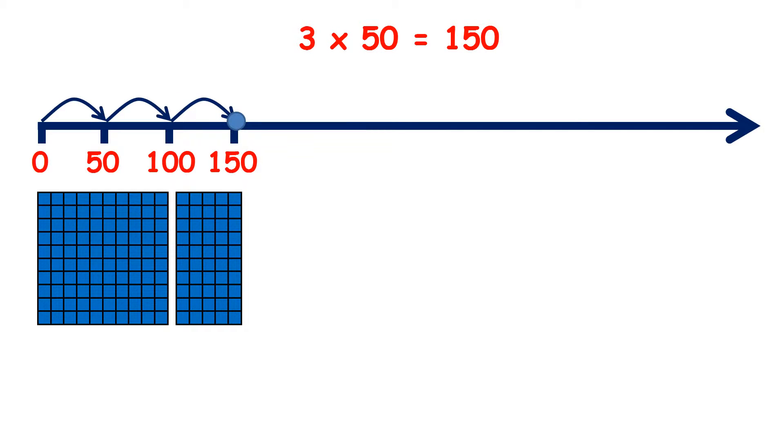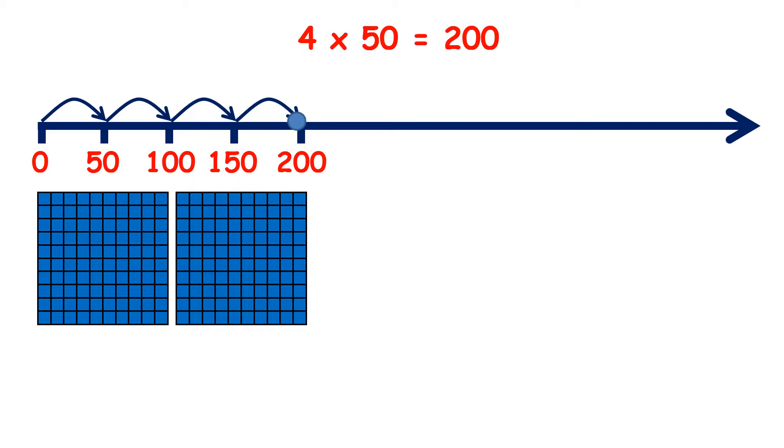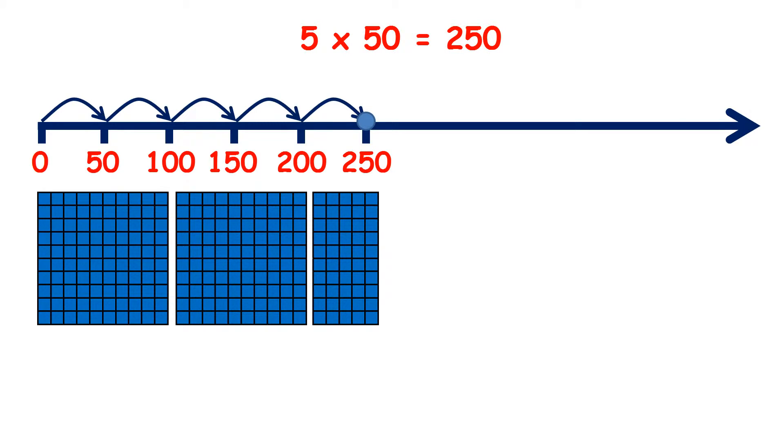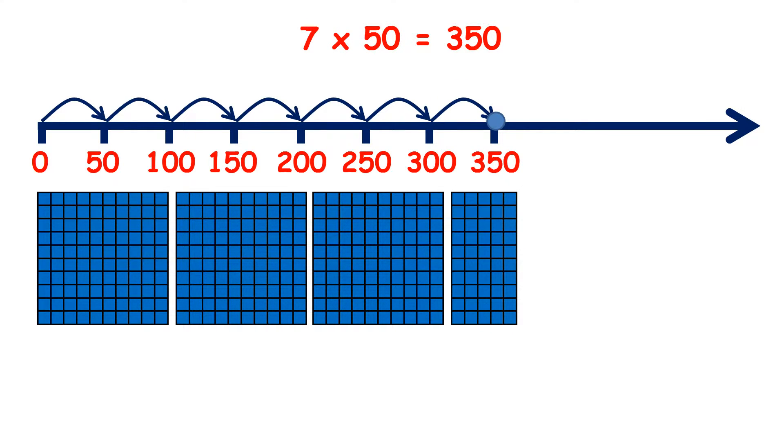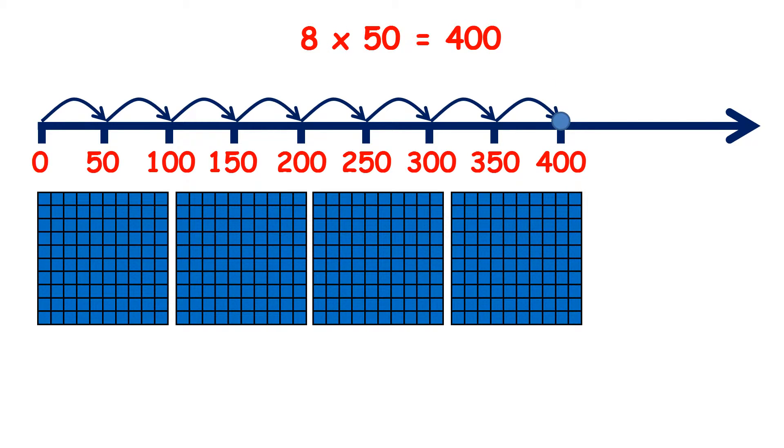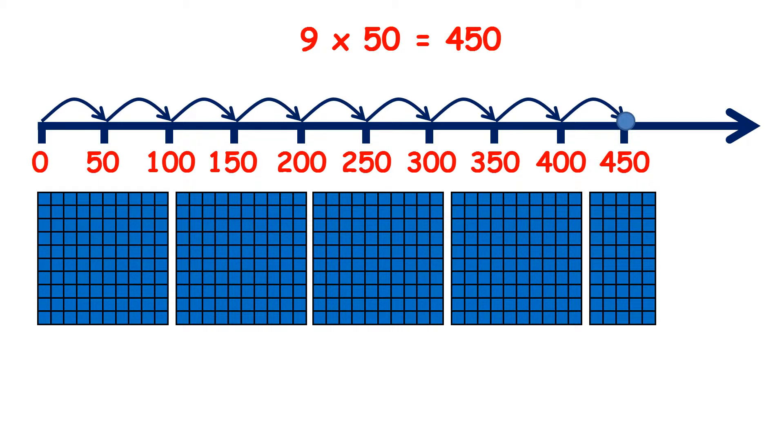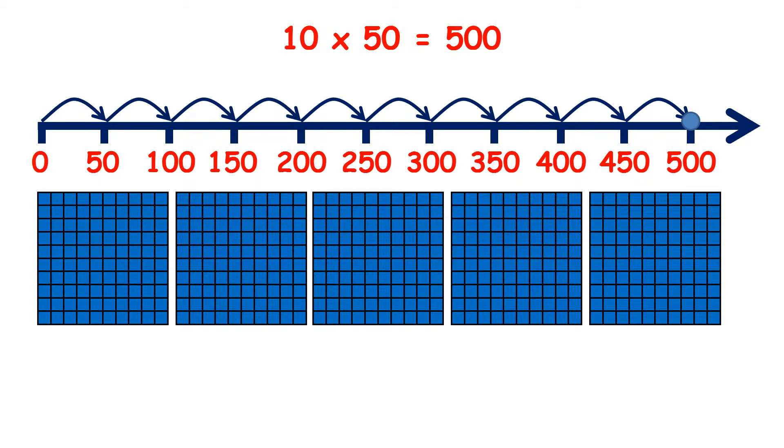3 times 50 is 150. 4 times 50 is 200. 5 times 50 is 250. 6 times 50 is 300. 7 times 50 is 350. 8 times 50 is 400. 9 times 50 is 450. 10 times 50 is 500.